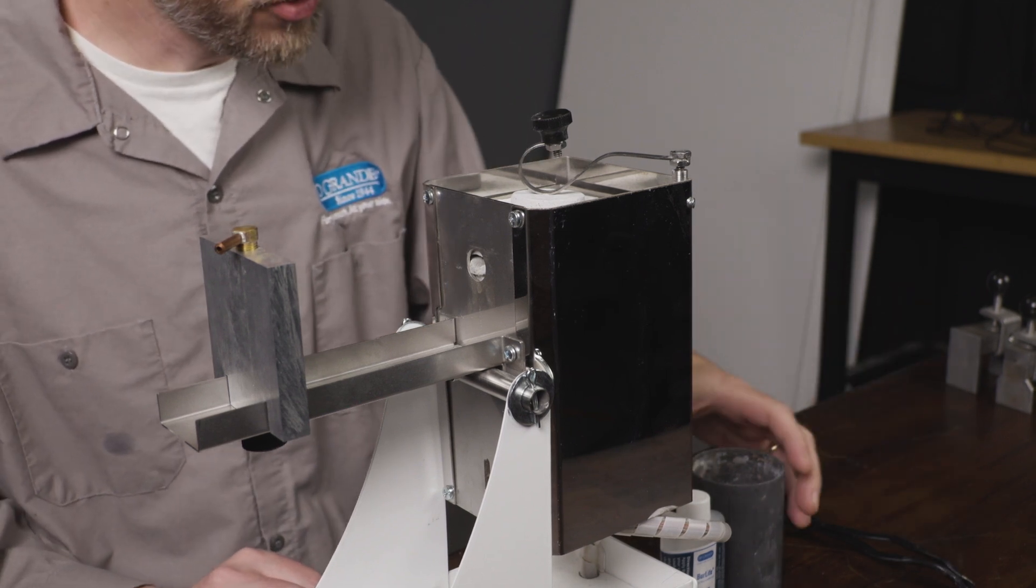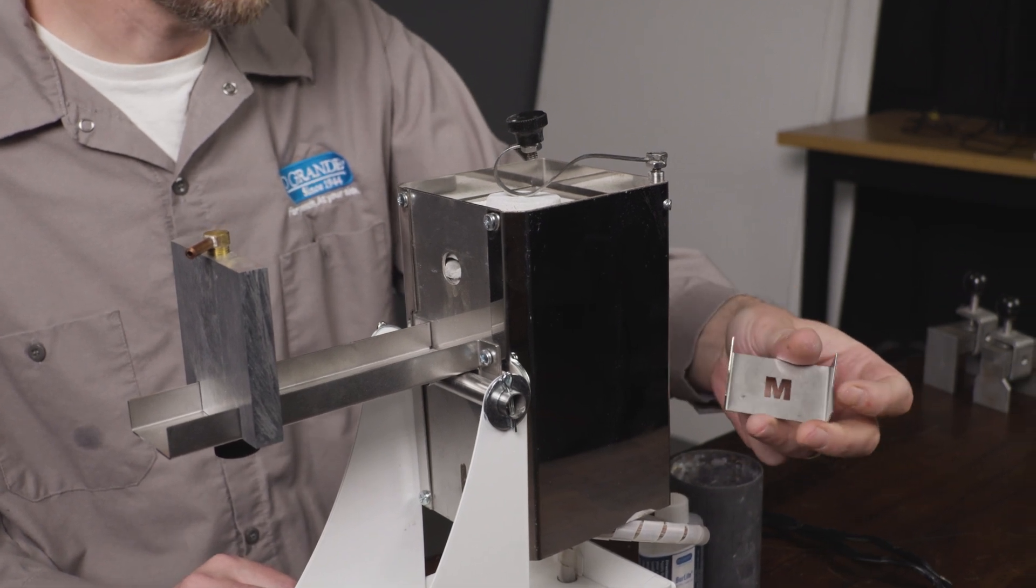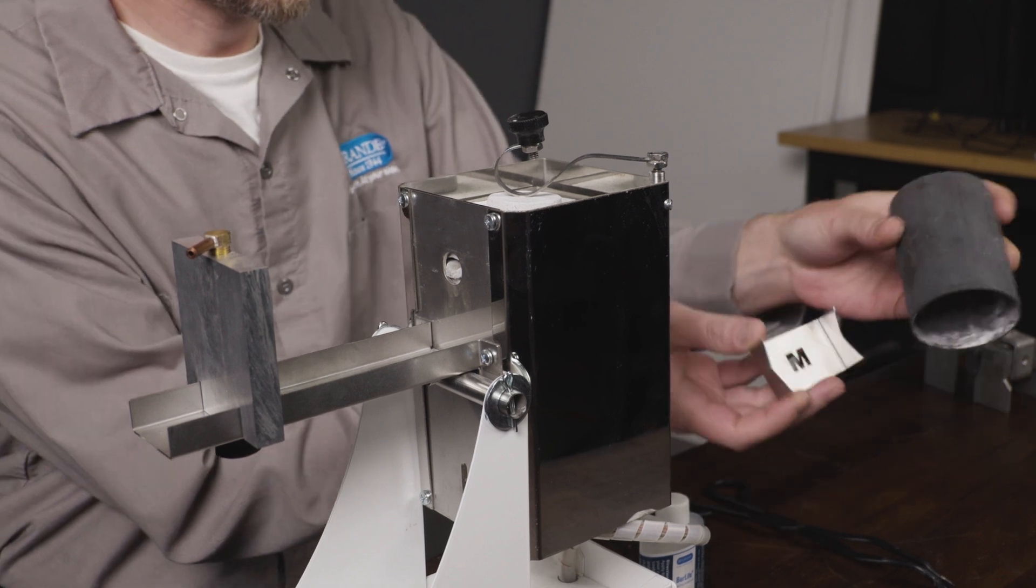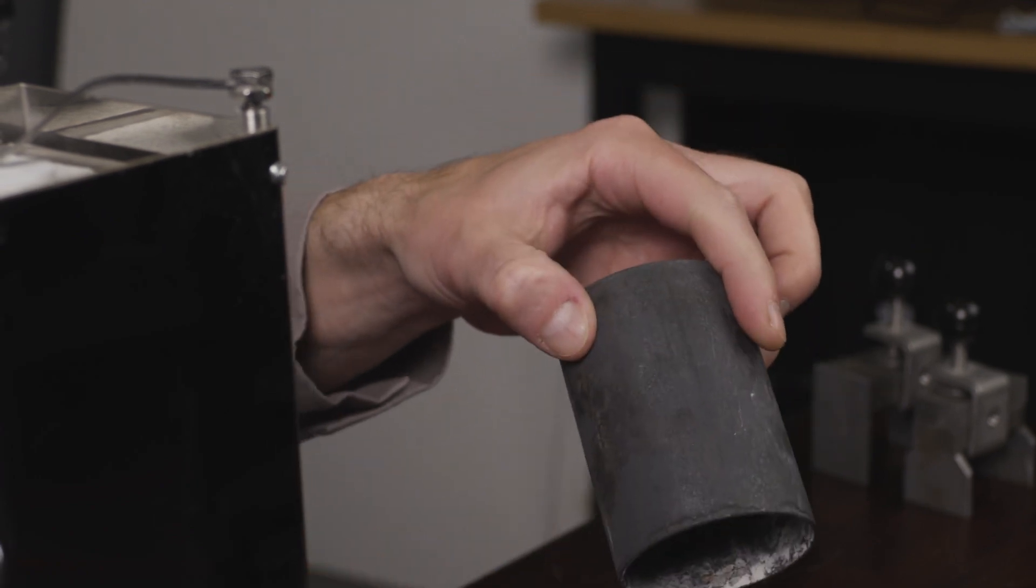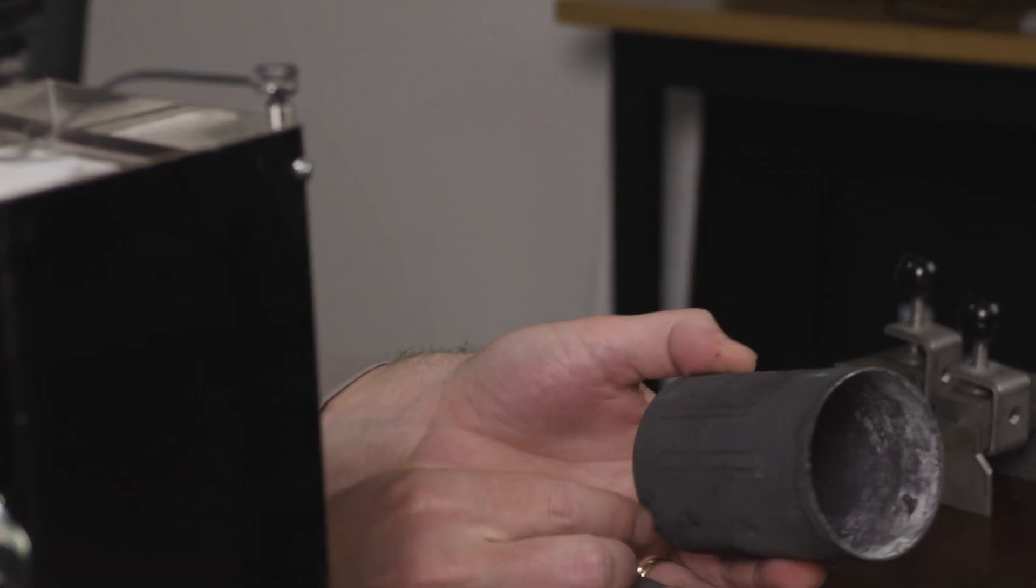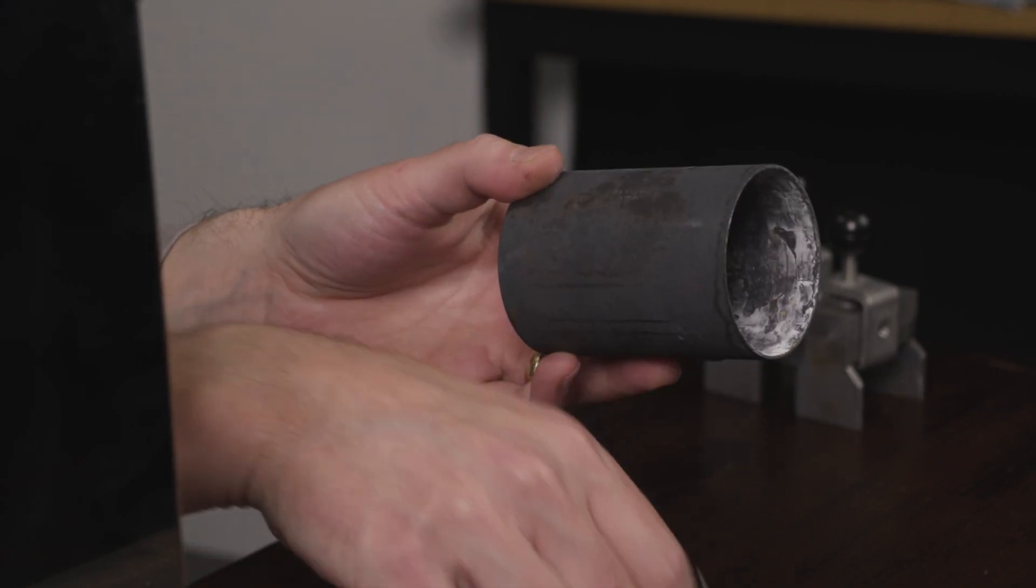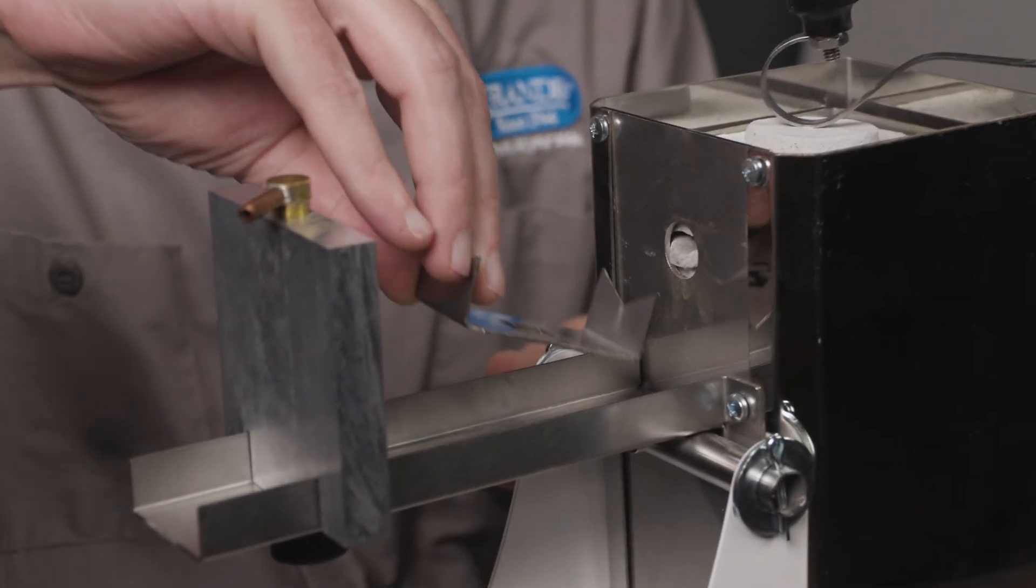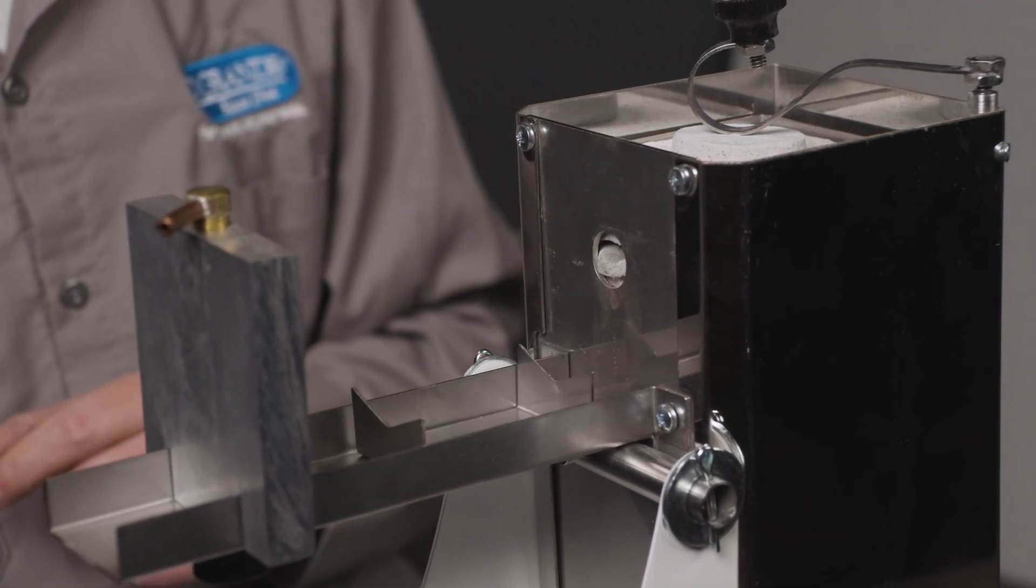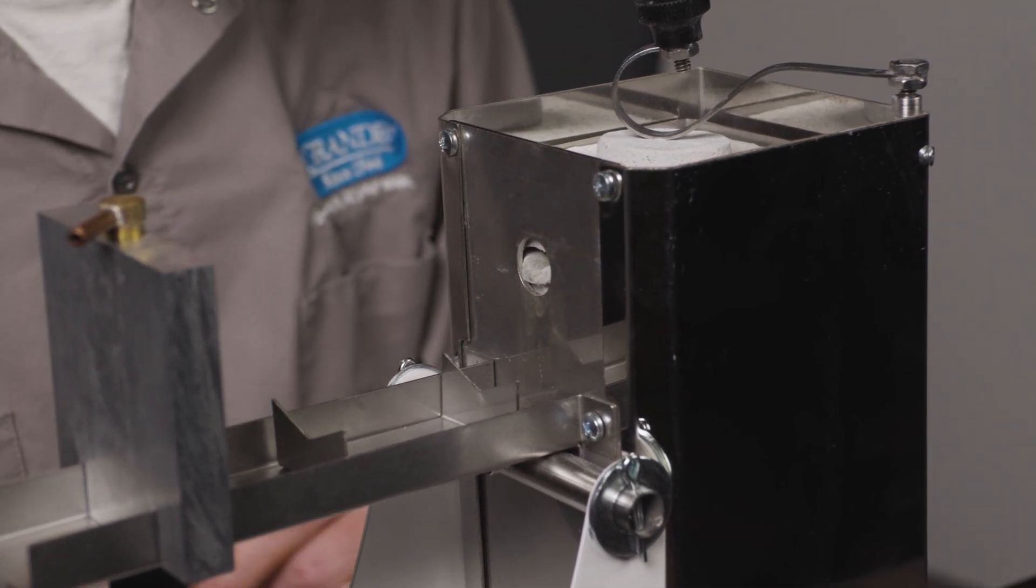Next, I want to select a flask cradle that corresponds to the size of my flask. Something like this will be just fine. The large is a little close to what I have right now. So I'm going to select the medium flask cradle and put that in this rail just like that. We don't have to worry about pushing it forward just yet.